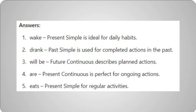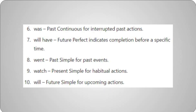Here are the answers. 1: Wake — present simple is ideal for daily habits. 2: Drank — past simple is used for completed actions in the past. 3: Will be — future continuous describes planned actions. 4: Are — present continuous is perfect for ongoing actions. 5: Eats — present simple for regular activities. 6: Was — past continuous for interrupted past actions. 7: Will have — future perfect indicates completion before a specific time. 8: Went — past simple for past events. 9: Watch — present simple for habitual actions. 10: Will — future simple for upcoming actions.